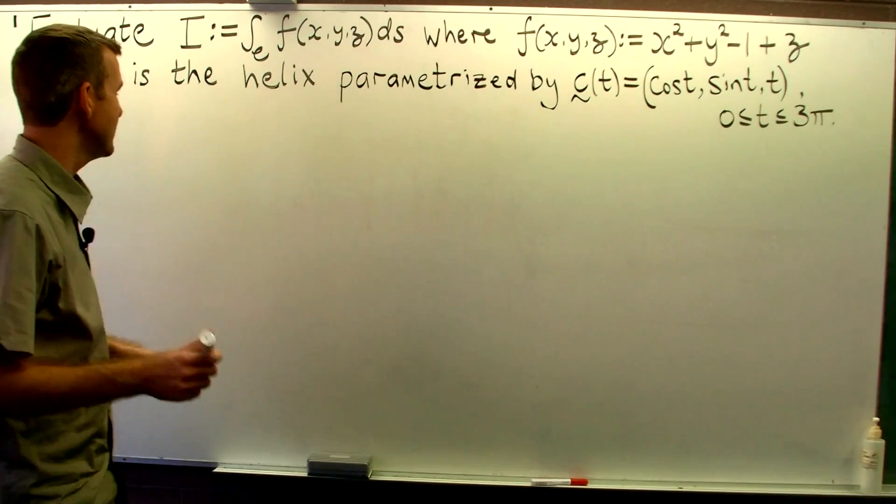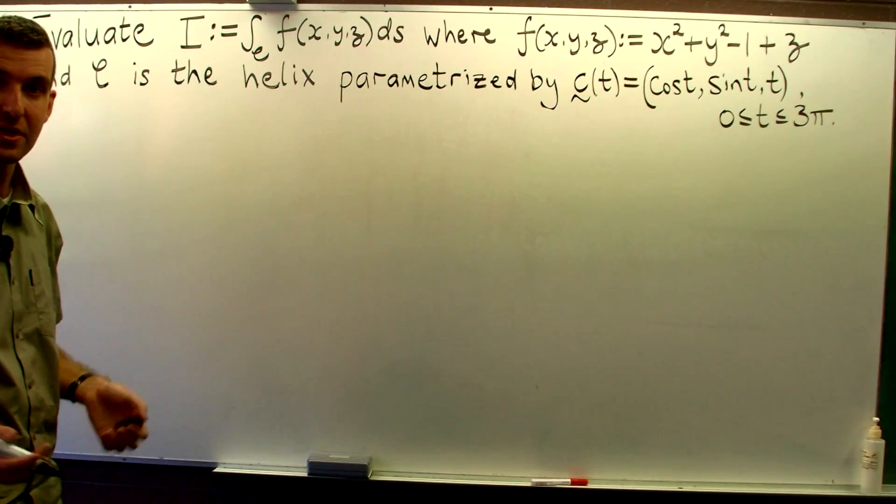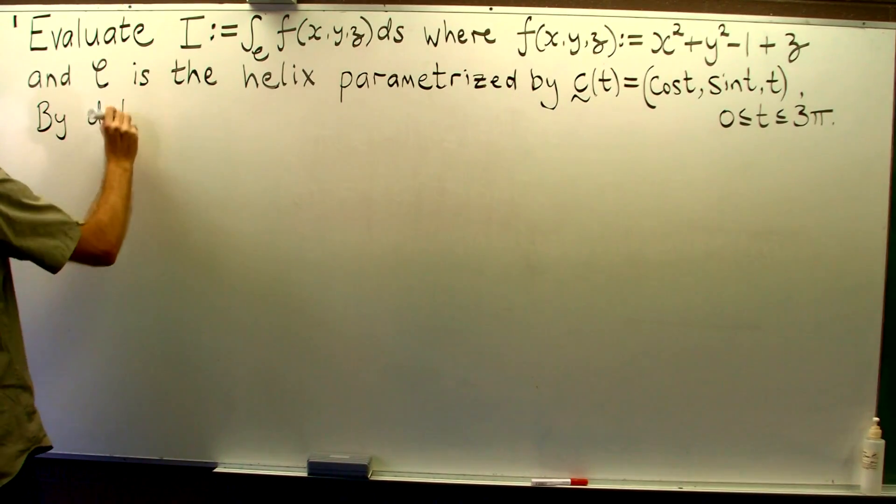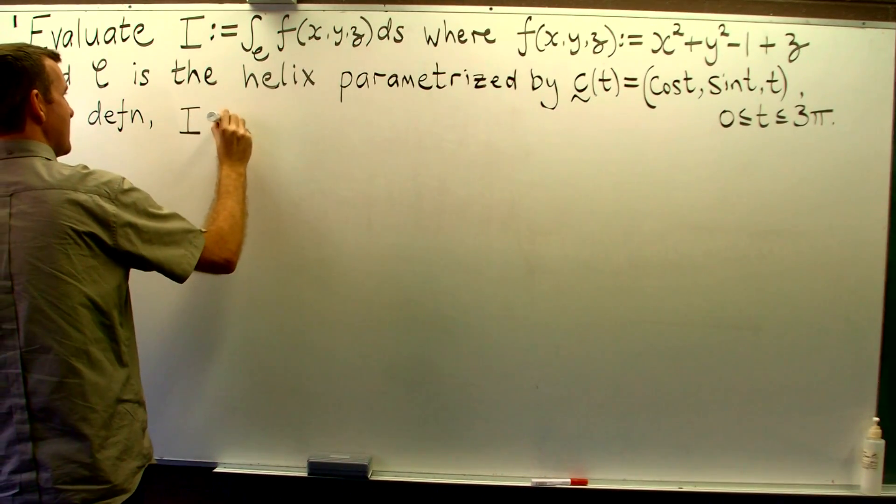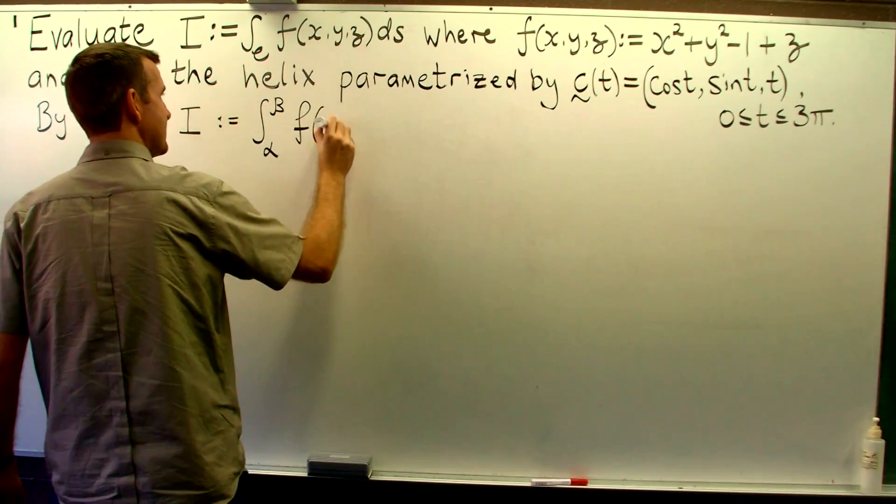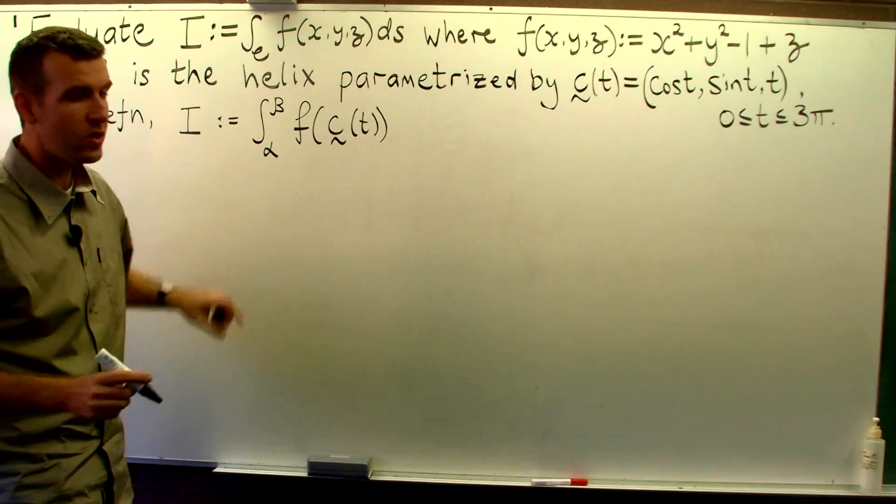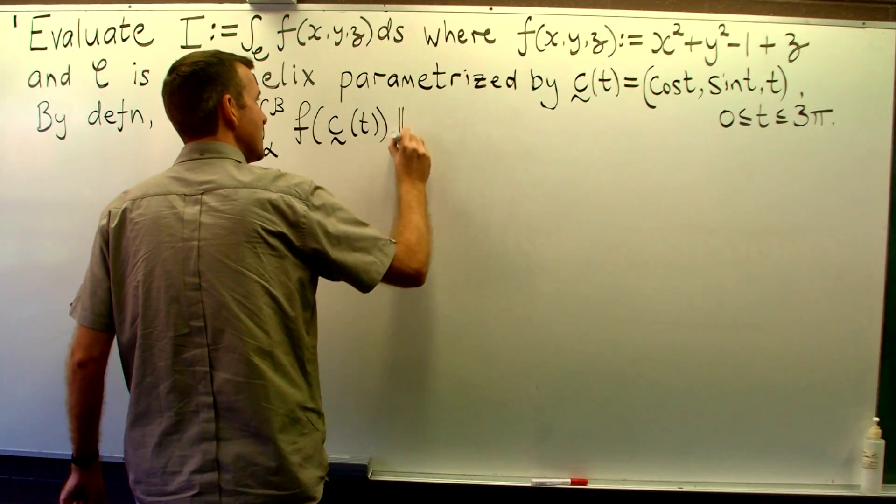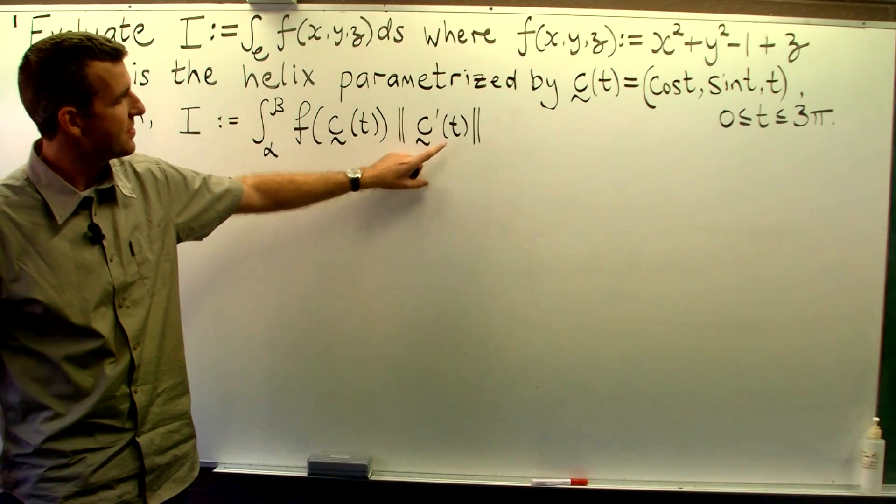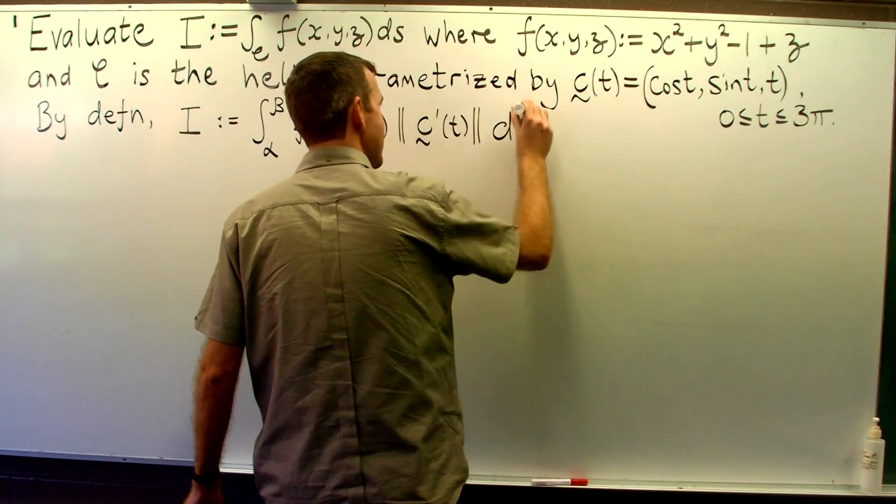So how do we do it? Well, essentially what we're going to do is break this path integral down into something that we already know and recognise. So, by definition, the path integral is just f evaluated along our parameterisation multiplied by the magnitude of the derivative of our parameterisation. We multiply these two things together and integrate them normally.